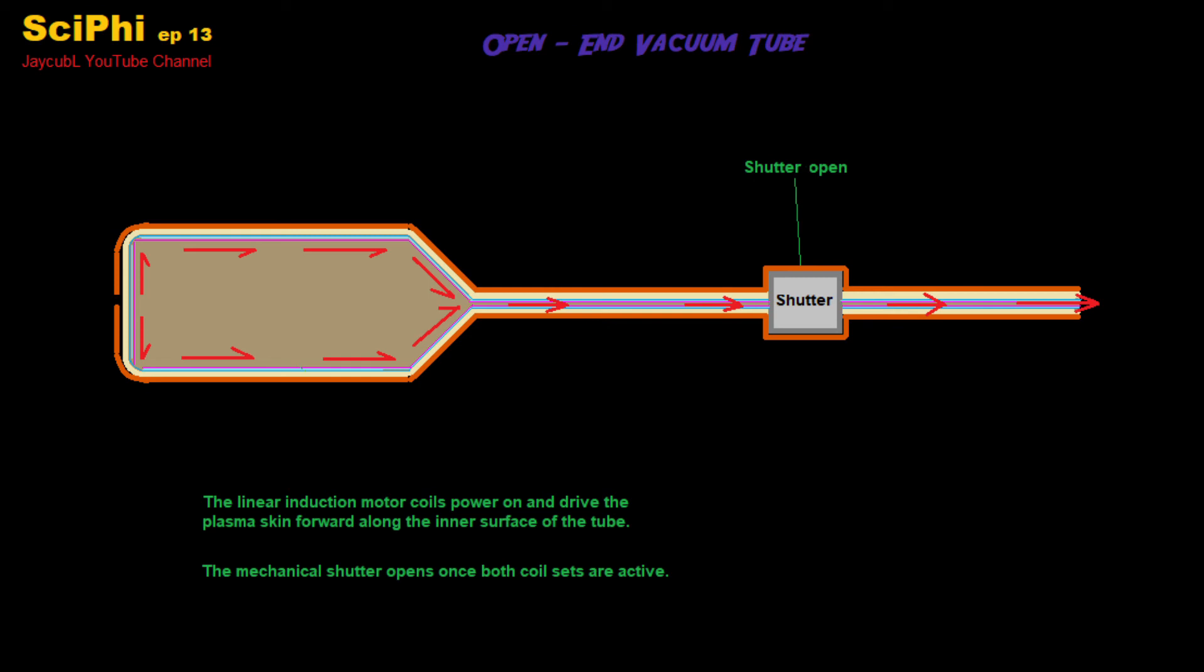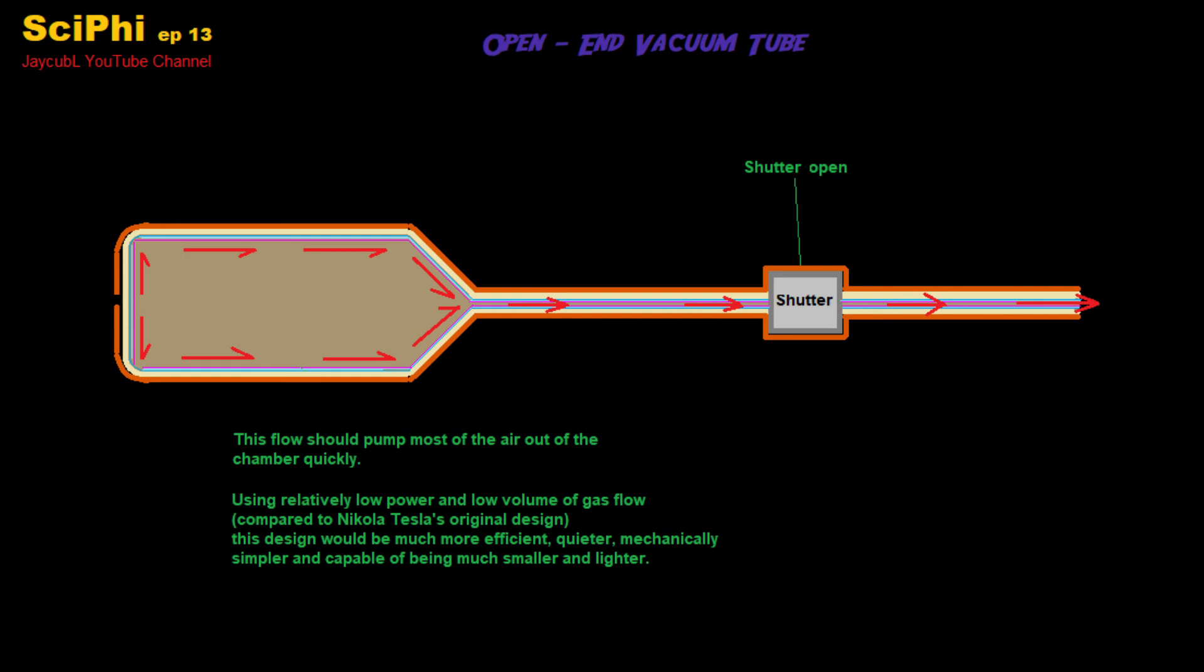By ionizing the air and driving it out of the tube, we can achieve, at least I think we can achieve, a high vacuum in this chamber using no moving parts and using relatively low energy.